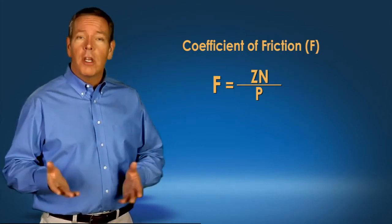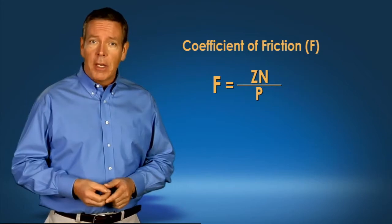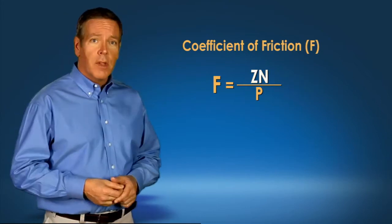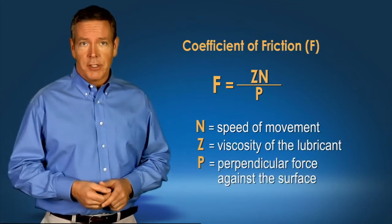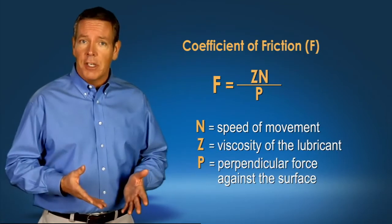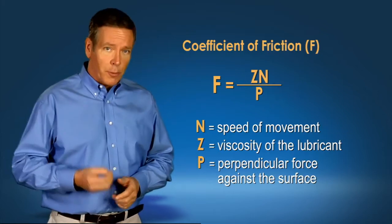For liquid lubricants, the force required to move a body is expressed as Zn, where n equals the speed of movement, and Z equals the lubricant's viscosity. A lubricant's viscosity is a measure of its resistance to flow.